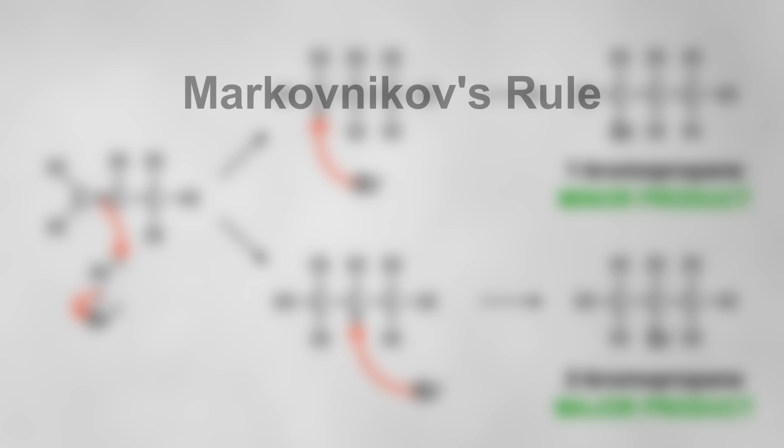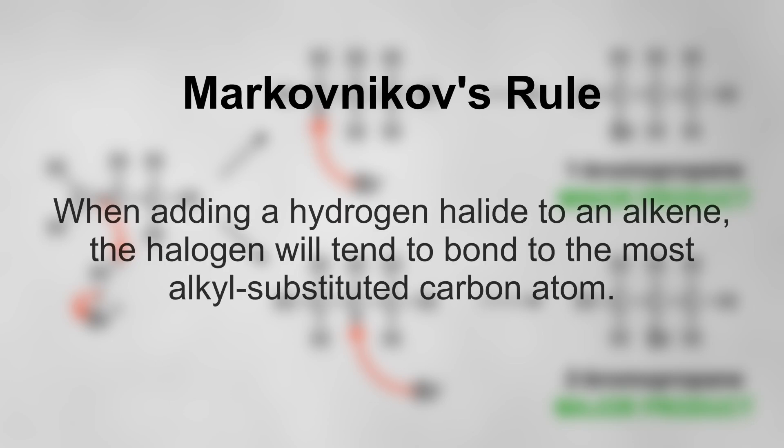This can all be summarized by Markovnikov's rule, which states that when adding a hydrogen halide to an alkene, the halogen will tend to bond to the most alkyl-substituted carbon atom.